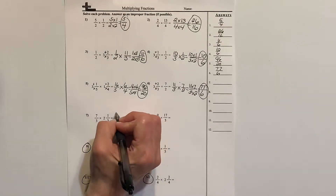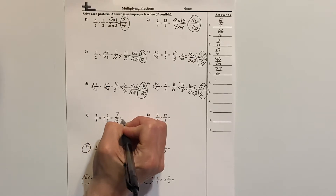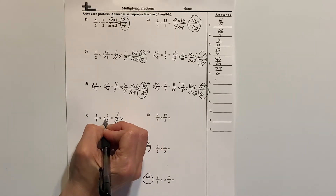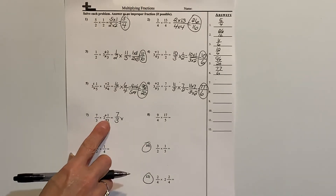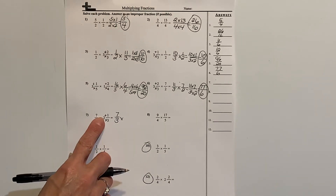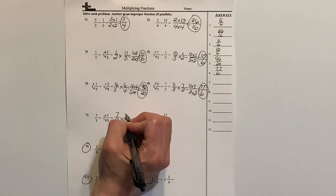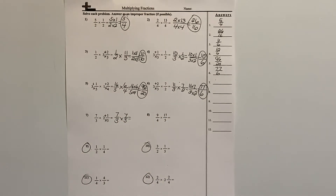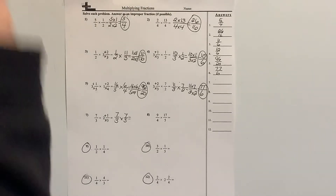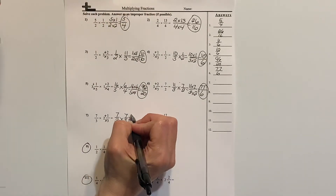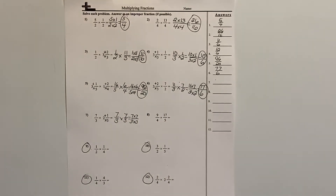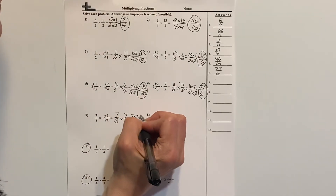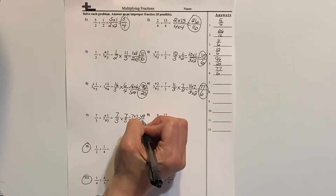Number 7: we start off with 7 thirds, which is fine. But then we have 2 and 1 third, which we need to change to an improper fraction: 3 times 2 is 6, plus 1 is 7, so that's 7 thirds. So we've got 7 thirds times 7 thirds — that's 7 times 7 over 3 times 3 — which is 49 ninths.